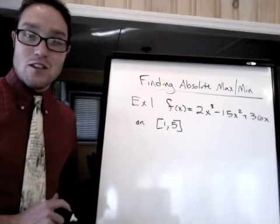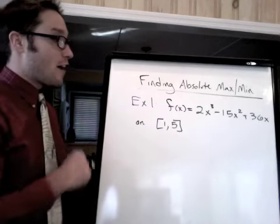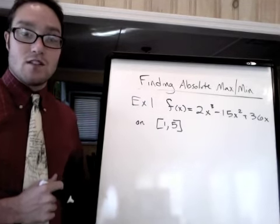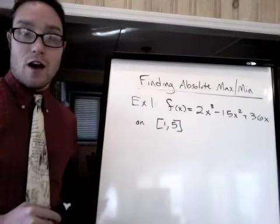Hey, so here's the first example. f(x) equals 2x cubed minus 15x squared plus 36x on this closed interval, 1 to 5.